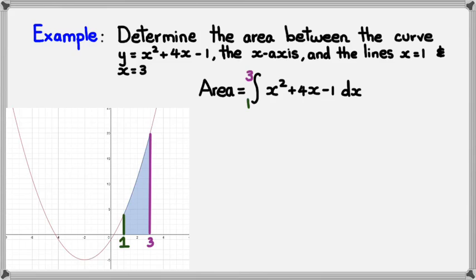So, I'm looking for that blue shaded area right there. Okay, so, at this point, I need to integrate the function. So, integrating the function, I'm going to get X cubed divided by 3 plus 2X squared minus 1X, and all that is calculated between 3 and 1.